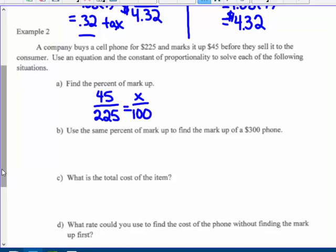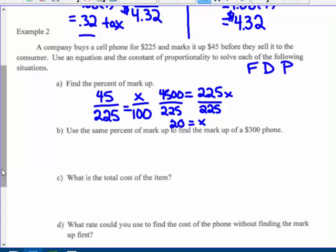It's a proportion, so there's lots of ways you can do it. $4500, the product of my extremes, equals the product of my means, $225X. When I divide by $225, which nicely goes into that $4500 twice, my percent of markup is 20%. The other way I could do this is FDP: change my fraction to a decimal to a percent. $45 divided by $225 gives me 0.2, which is 20%.